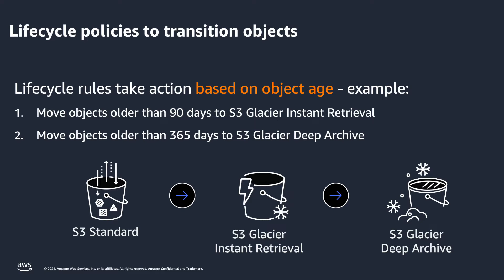Then, as we saw in the example, we wanted a storage class for objects needed just for retention purposes. Rule number 2 is set up to move objects older than 365 days to S3 Glacier Deep Archive. This is how you can cost optimize your buckets by moving objects from one storage class to another once you know the access patterns of the objects in your bucket.